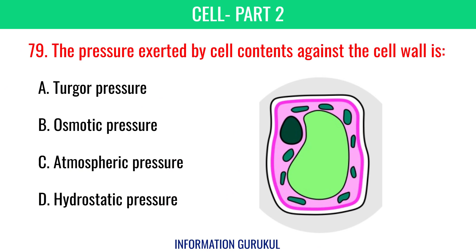The pressure exerted by cell contents against the cell wall is turgor pressure.